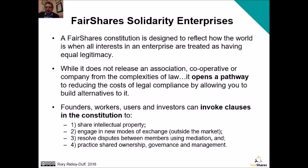Let's summarise the argument so far. In all the popular enterprise forms that we're aware of, the norm is to exclude key stakeholders — usually you enfranchise just one and include others only if you can think of a good reason to do so. The logic is the reverse in the fair shares enterprise system: you start by including your key stakeholders, the ones you most need to survive, and you only exclude a group if you can think of a good reason to do so.